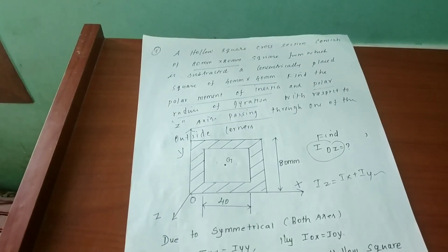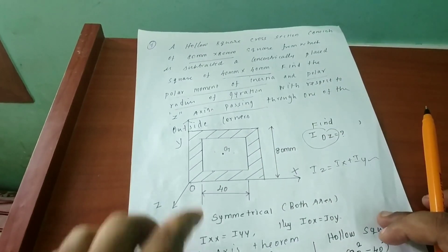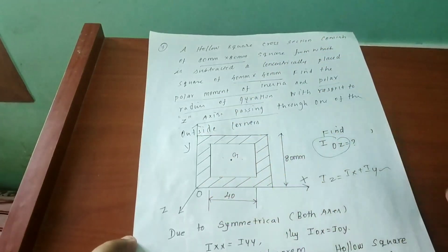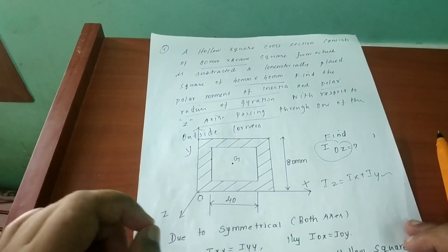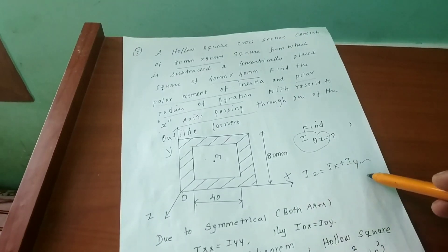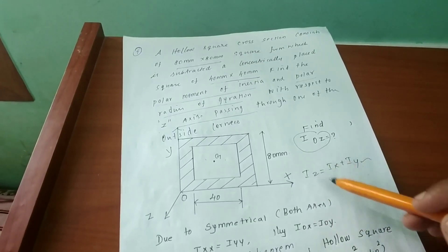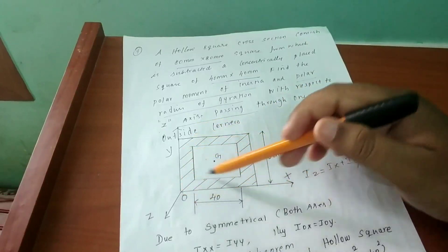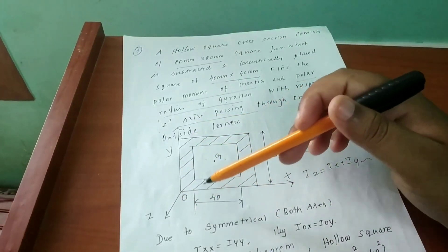This is another Type 4 problem. So we have the diagram with x, y, and z axes. We can directly use the perpendicular axis theorem. Using the perpendicular axis theorem: Iz equals Ix plus Iy.